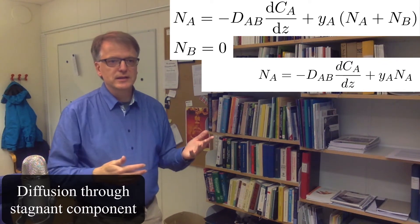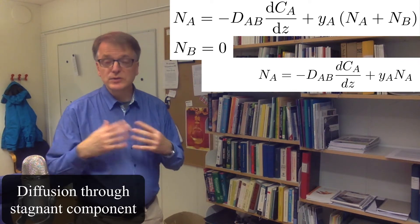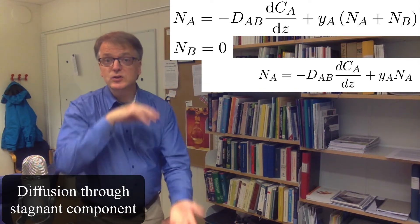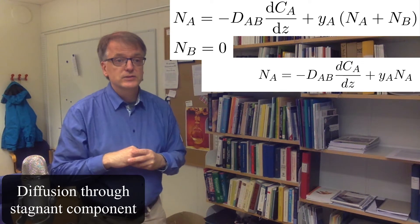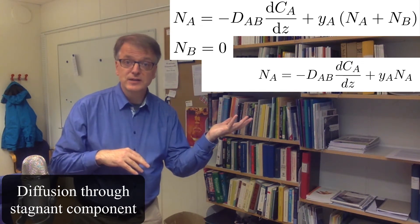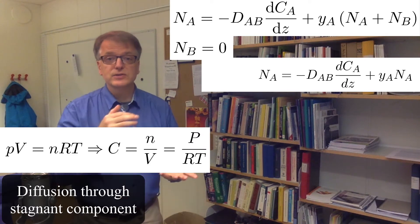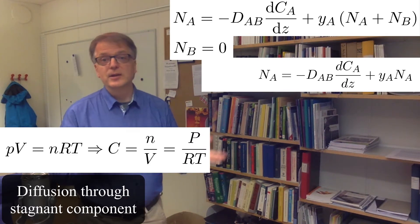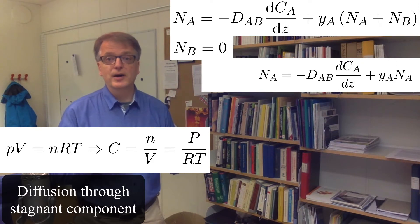And we can rearrange this here and say that well the concentration we can translate that to a molar fraction. So instead we have PV equals nRT, right, the ideal gas law. And so CA must be the same thing as the partial pressure of A divided by the gas constant and the temperature in Kelvin.